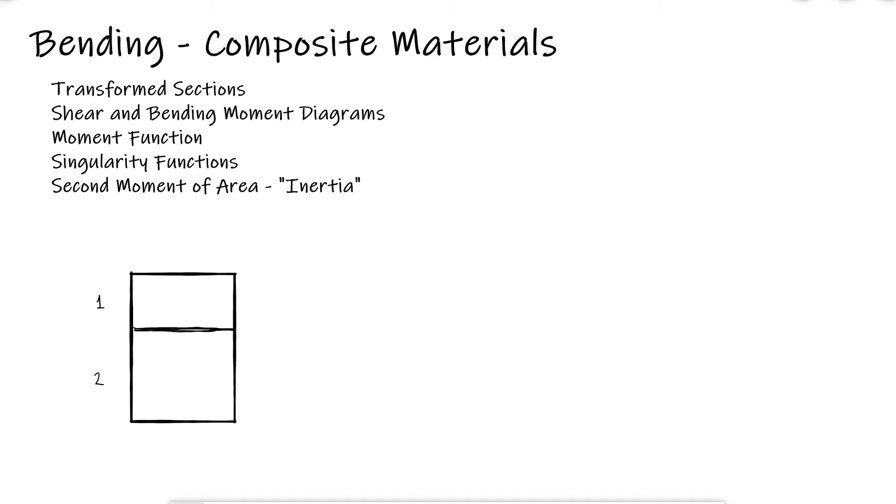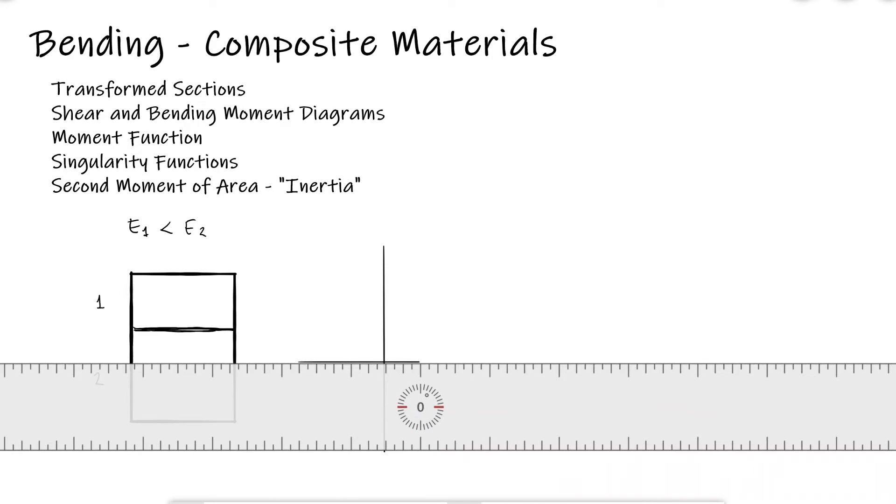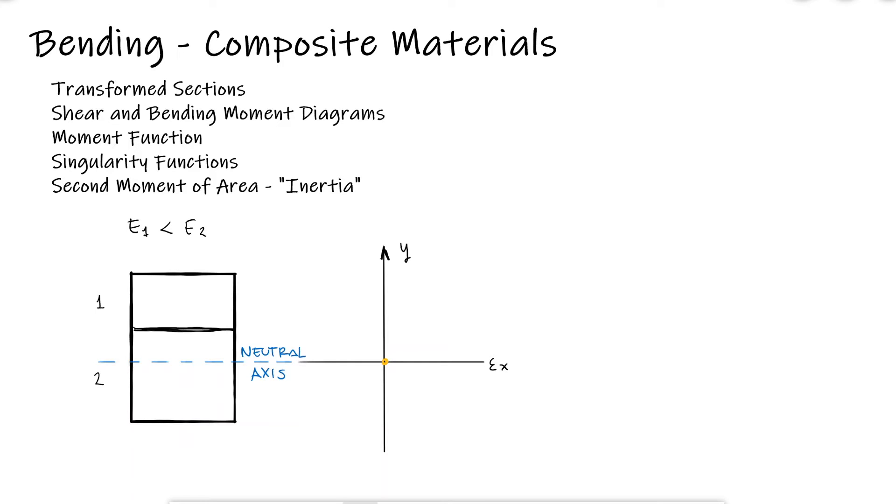where the elastic modulus of 1 is lower than that of 2, we'd see that the strain starts at 0 for y equal to 0, that is, on the neutral axis, and it increases linearly until it reaches a maximum value either at the top or the bottom. There is no discontinuity of the strain at the boundary between material 1 or 2.